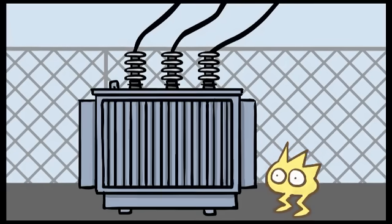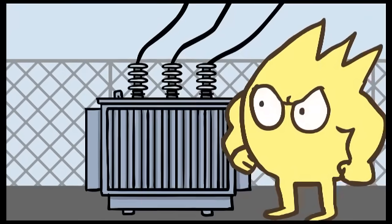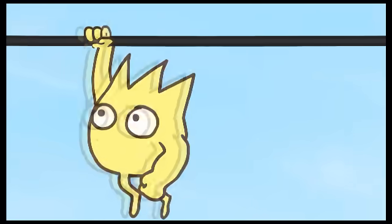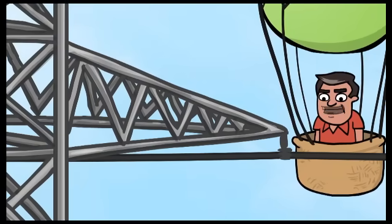For electricity to move through one of the four grids, its voltage must first be increased by a device called a transformer. Then the electricity can travel long distances across high voltage transmission lines. These high voltage lines are generally strung between giant metal towers.